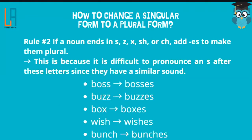Rule number two: if a noun ends in S, Z, X, SH, or CH, you add ES to make them plural. We do that in English because it is difficult to pronounce an S after these letters since they have a similar sound. For example, if you have the word boss and just add S, it's hard to pronounce. So in this situation, you add ES, because the ending letter of the word is S. So boss becomes bosses. The word buzz ends in Z, so you add ES — it becomes buzzes.